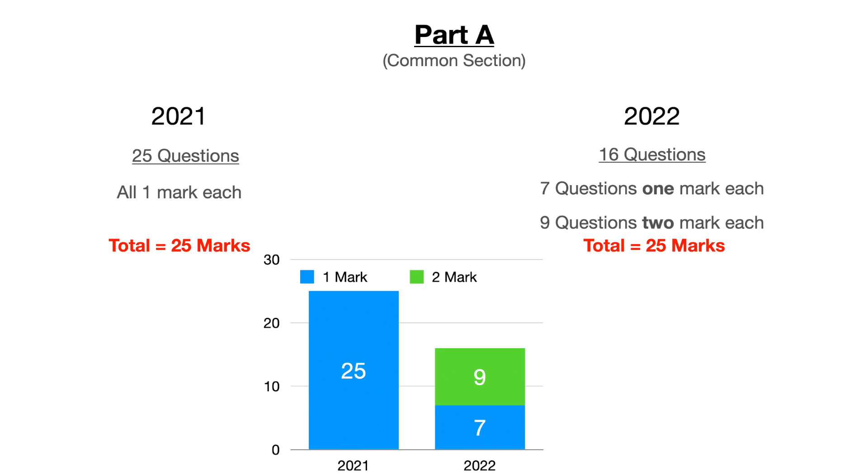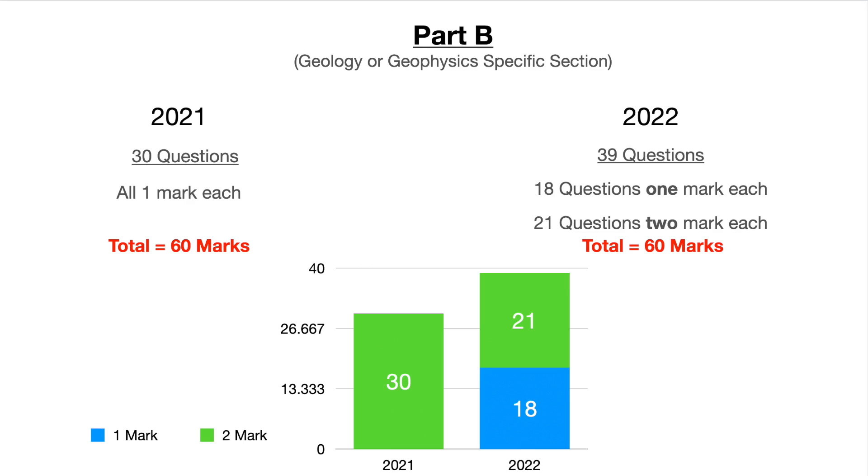So how are we maintaining the same weightage if the total number of questions in each section has changed? The major change we see is that until 2021, you used to get only one mark questions in section A and only two mark questions in section B. In 2022, you will get both one mark and two mark questions in section A, and both one mark and two mark questions in section B. Out of the 16 questions in section A, nine will be two marks each and seven will be one mark each, giving a total of 25 marks. In section B, 21 questions will be two marks and 18 questions will be one mark, giving a total of 60 marks.